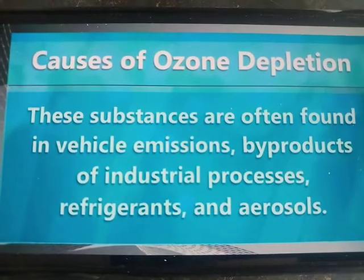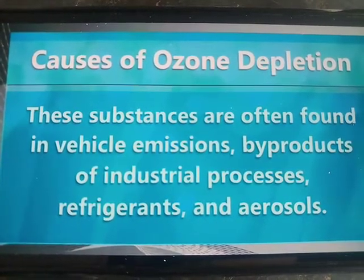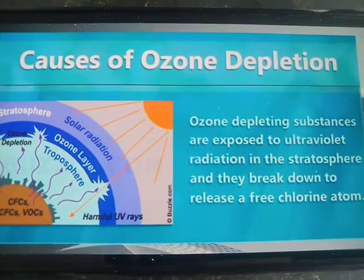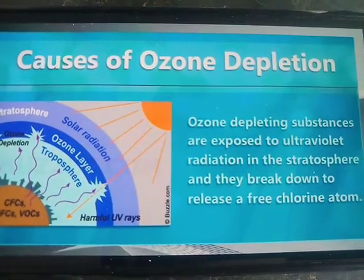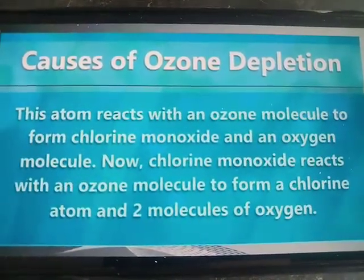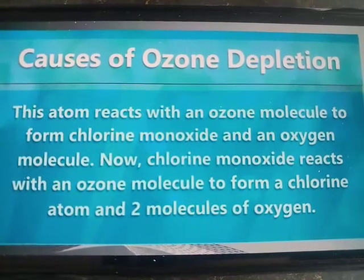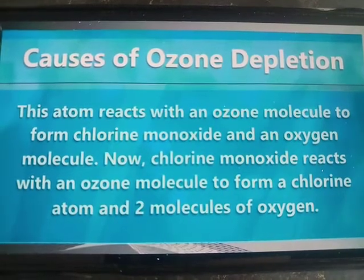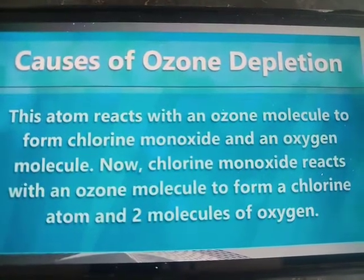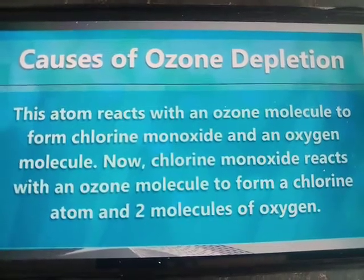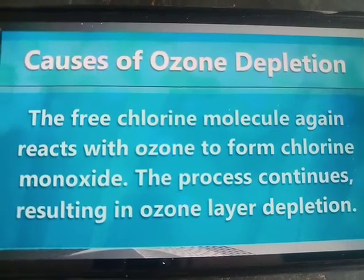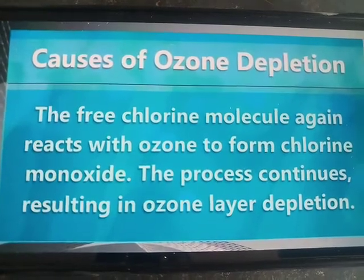These substances are often found in vehicle emissions, byproducts of industrial processes, refrigerants, and aerosols. Ozone depleting substances are exposed to ultraviolet radiations in the stratosphere and break down to release a free chlorine atom. This atom reacts with an ozone molecule to form chlorine monoxide and an oxygen molecule. Chlorine monoxide then reacts with an ozone molecule to form a chlorine atom and two molecules of oxygen. The free chlorine atom again reacts with ozone to form chlorine monoxide — this process continues, resulting in ozone layer depletion.